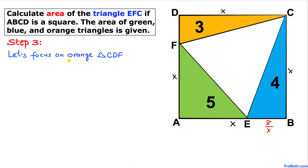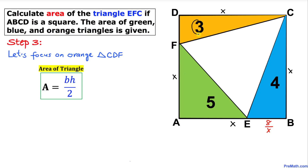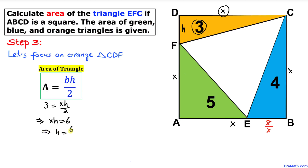In the next step we are going to focus on the orange triangle CDF. The area formula is A equals base times height divided by 2. The area of this orange triangle is 3. The base is x units and let's call the height H. So: 3 equals x times H divided by 2, giving x times H equals 6, which means H equals 6 over x.